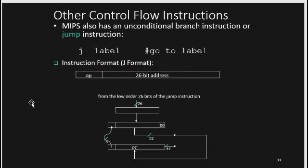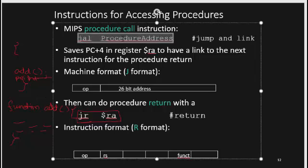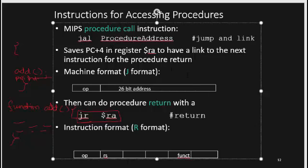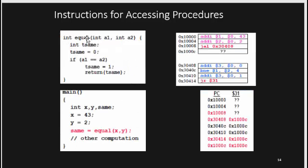Function calling in MIPS uses the JAL (Jump and Link) instruction. JAL calls a function by jumping to the procedure address. It follows the J-format with a 26-bit address. So when the main function calls another function such as 'equal', we write JAL followed by the procedure address and jump into that function's instructions.